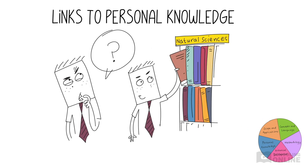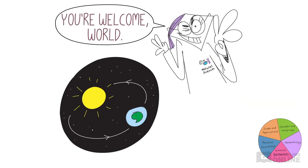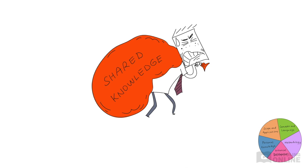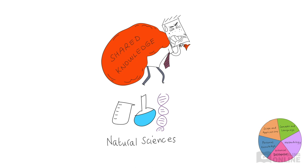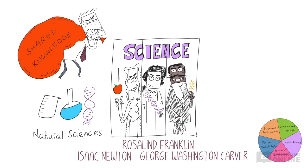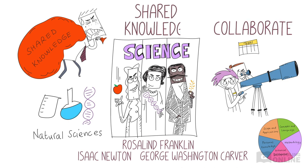Asking questions like this helps us understand how this area of knowledge links to personal knowledge. Individuals can gain a lot from accessing the shared knowledge that makes up the natural sciences. Scientific knowledge can have a huge impact on how individuals view and think about the world. Thanks to scientific discoveries, we now know that it's actually the Earth that revolves around the sun and that proper hygiene practices prevent the transmission of disease. Similarly, the body of shared knowledge that makes up the natural sciences has benefited enormously from the personal knowledge of scientists throughout history. We can thank Newton for his insights on motion and gravity, Rosalind Franklin contributed to our understanding of DNA, and George Washington Carver developed a method of crop rotation for farmers. These days, individual researchers often collaborate to produce shared knowledge in the natural sciences.